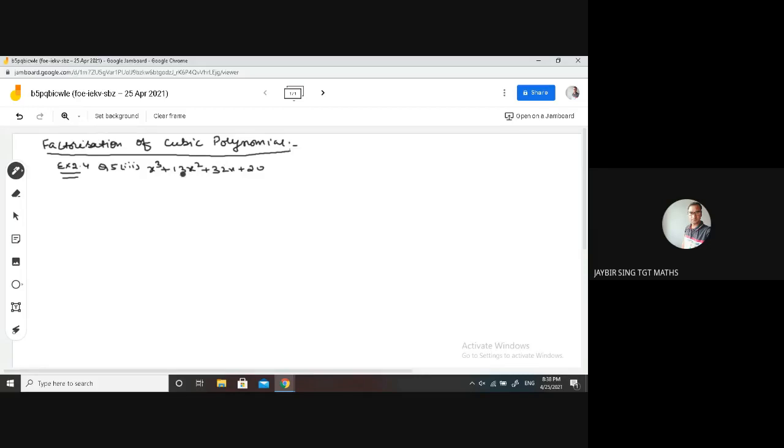You just note down the procedure. First of all, first step is factors of, we have to write factors of this constant. Factors of 20. These are plus minus 1, plus minus 2, plus minus 4, plus minus 5, plus minus 10, and plus minus 20.